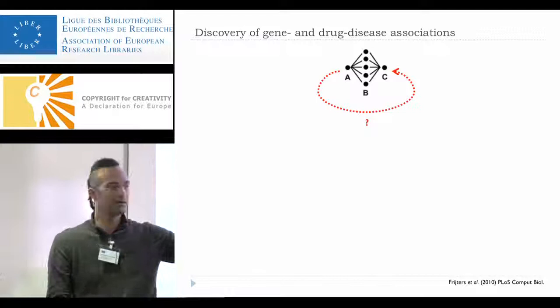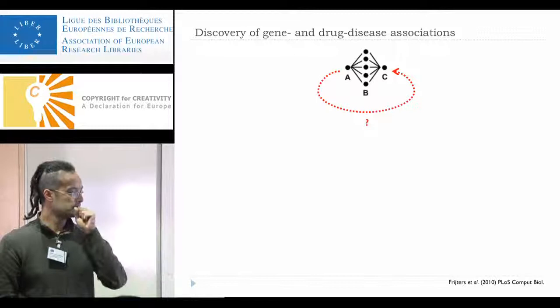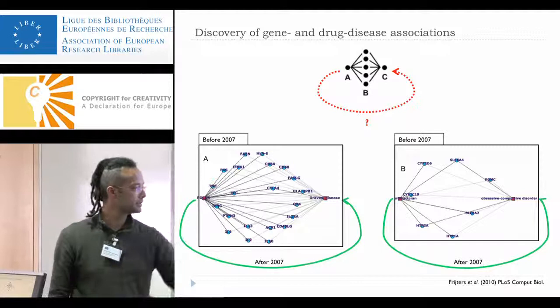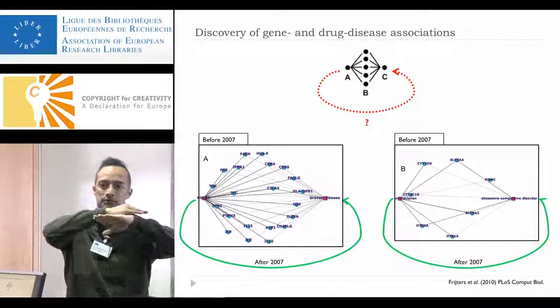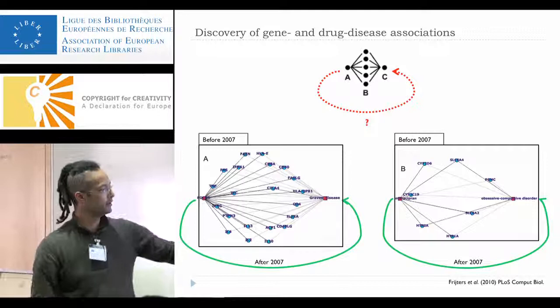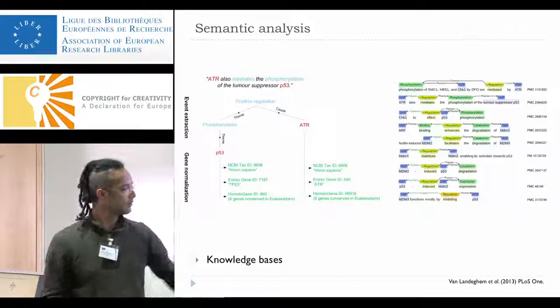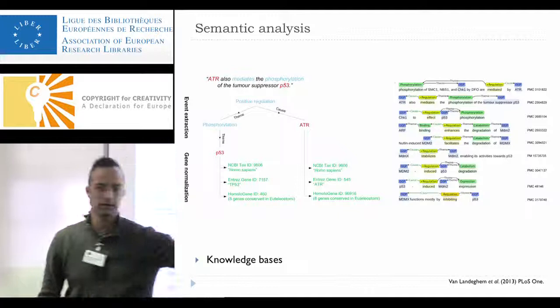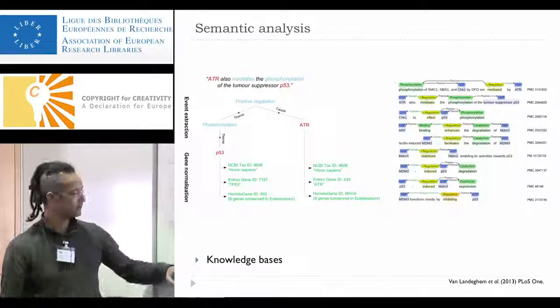There are two examples: a gene and a disease, or a chemical and a disorder. If you look at the literature after the cutoff point, you can sometimes find a real link. This is information extraction — finding predicted connections that are later validated.